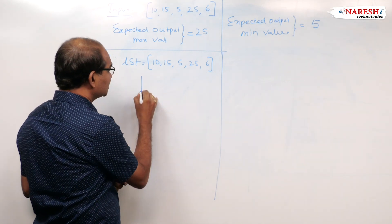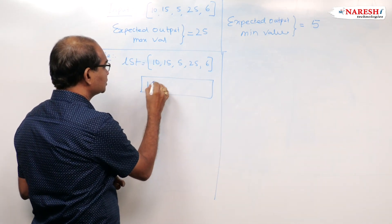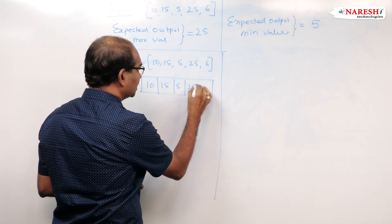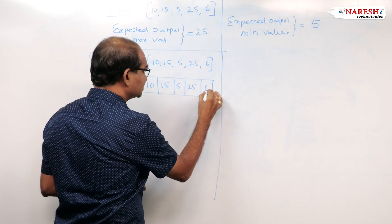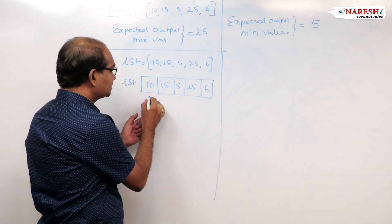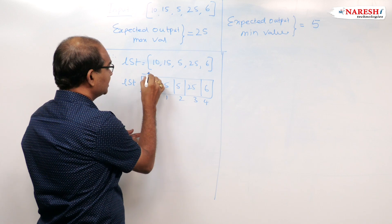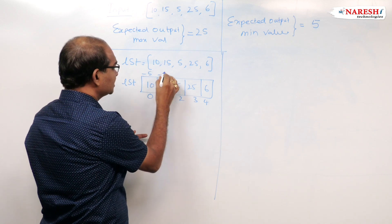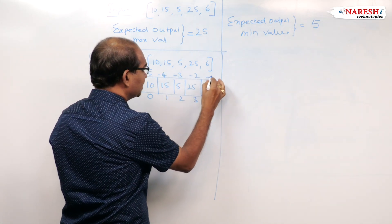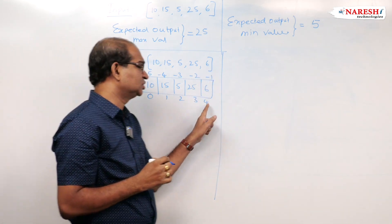If you look at the memory management of that, the values will be stored as 10, 15, 5, 25, and 6. LST is an object whose positive indices are 0, 1, 2, 3, 4, and negative indices are -5, -4, -3, -2, -1.